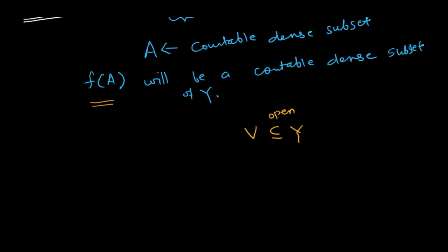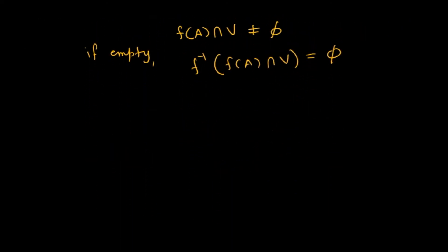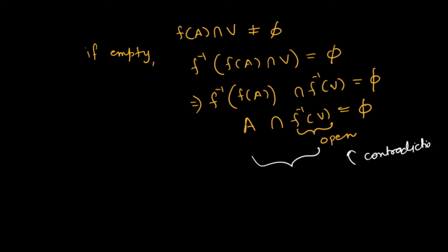Take any open set V in Y. We need to show F(A) ∩ V is non-empty. Suppose it is empty; then F⁻¹(F(A) ∩ V) is also empty. We can write this as F⁻¹(F(A)) ∩ F⁻¹(V), which gives A ∩ F⁻¹(V) = ∅. Since F is continuous, F⁻¹(V) is open, so A intersected with an open set is empty — a contradiction since A is dense. Hence F(A) ∩ V is non-empty, proving Y is separable.